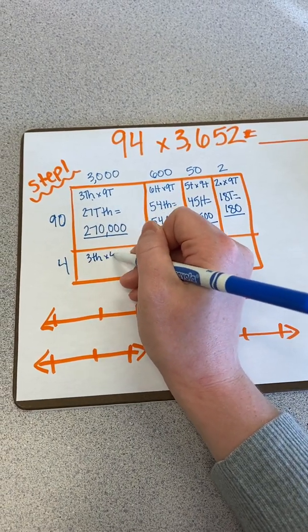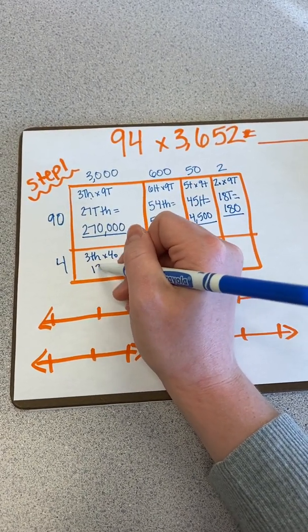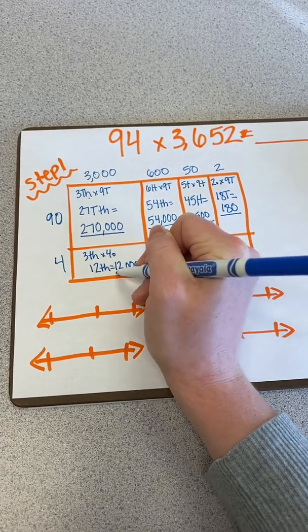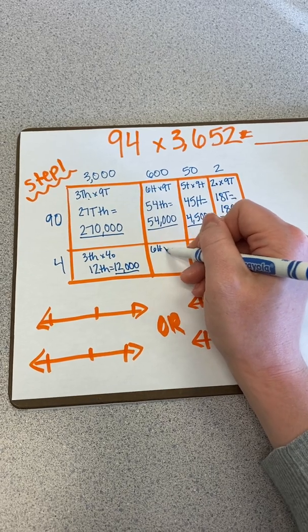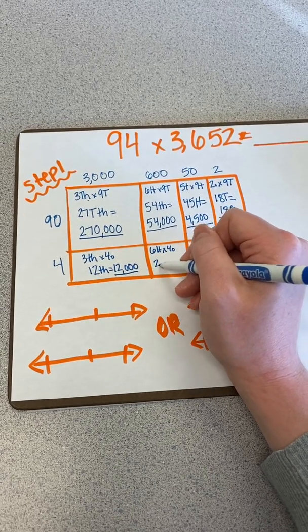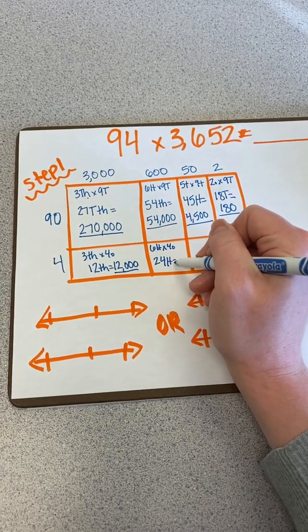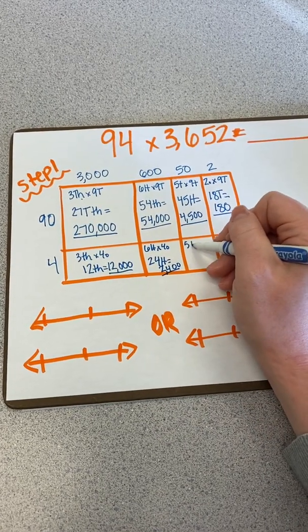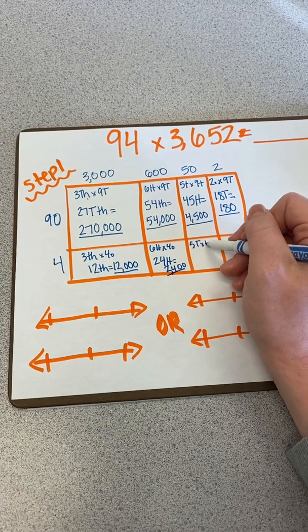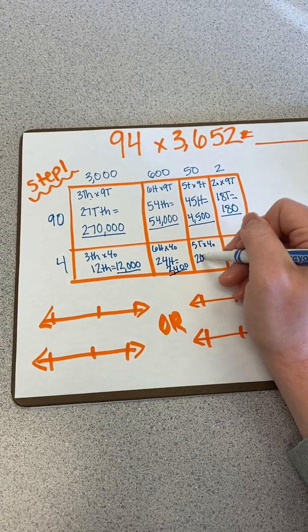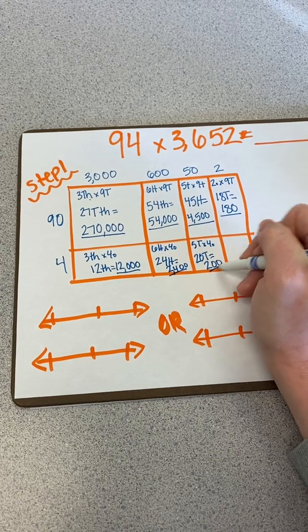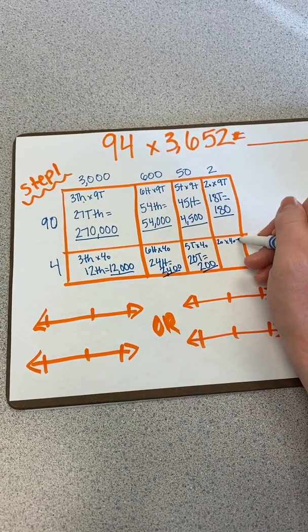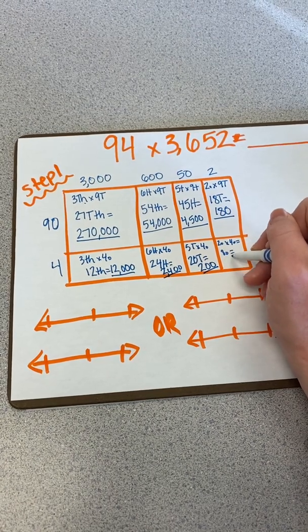Three thousands times four ones is 12 thousands, which has a value of 12,000. Six hundreds times 4 ones is 24 hundreds, which is 2,400. Five tens times 4 ones is 20 tens, which has a value of 200. And two ones times 4 ones equals 8 ones, which has a value of 8.